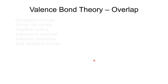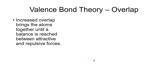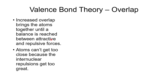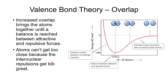The better the overlap, the stronger the bond is going to be. You want as much overlap as possible without getting too close, because if the nuclei get too close, their positive charges will cause repulsion. You want the perfect balance between attractive and repulsive forces. If they get too close, the internuclear repulsions will cause them to push away.